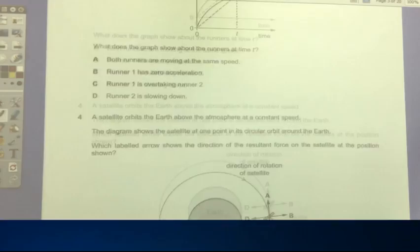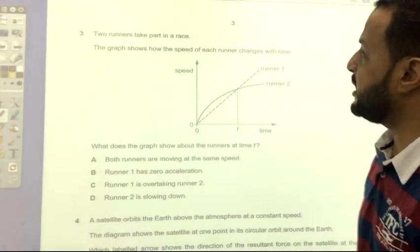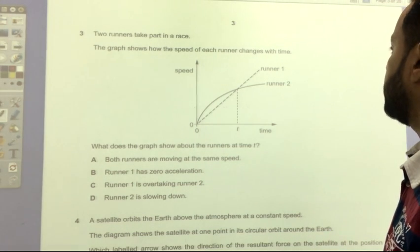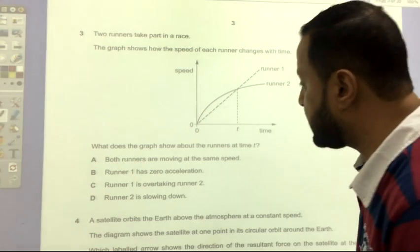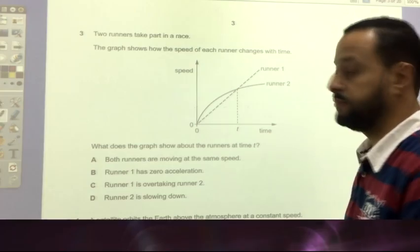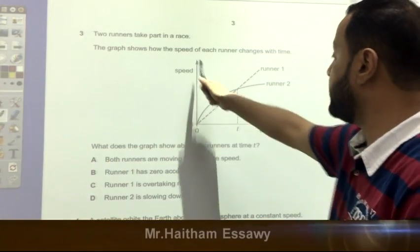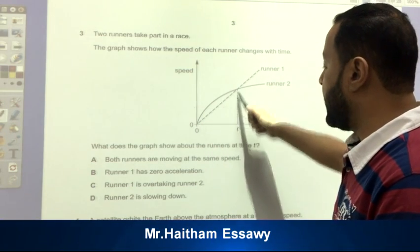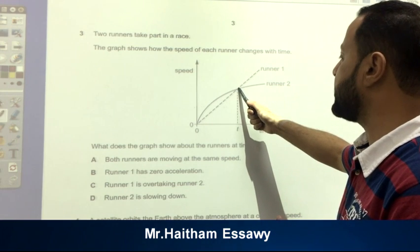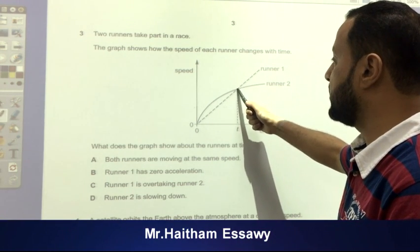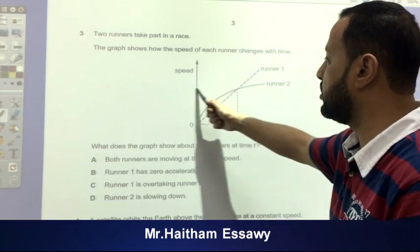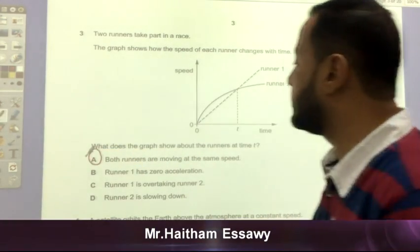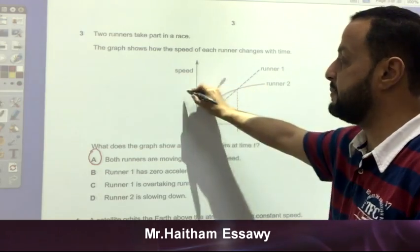After that, two runners take part in a race. The graph shows how the speed of each runner changes with time, as you see. What does the graph show about the runners at time t? We have relation between speed and time. As you see, this is for runner 1 and this is for runner 2. At time t, this point is intersection between the two runners or the two graphs. And at this point, the speed will equal between runner 1 and runner 2. So we have to choose A: both runners are moving at the same speed.